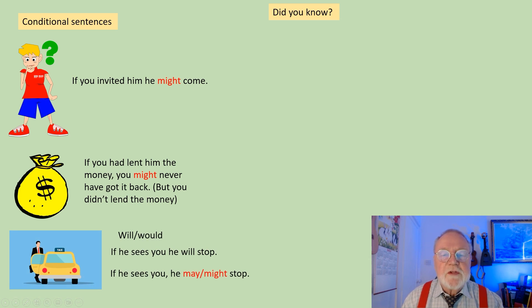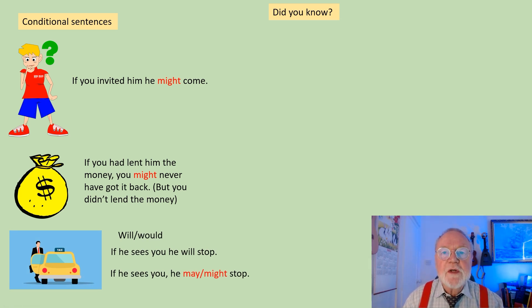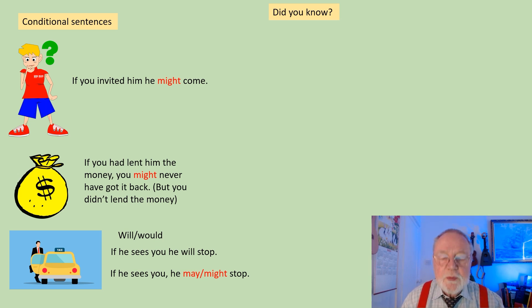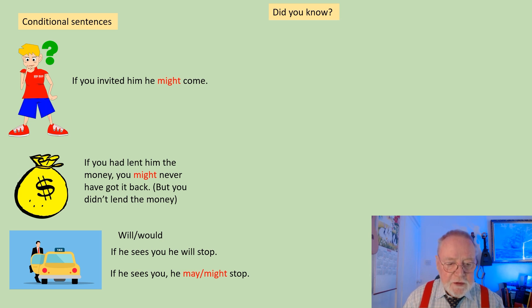We can also substitute will and would in conditional sentences with may and might. If he sees you, he will stop. If he sees you, he may or he might stop.